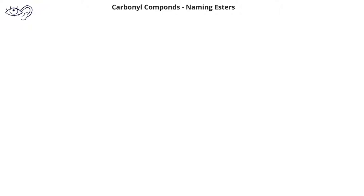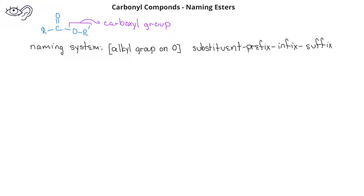Naming esters is a bit more complex than naming acyl chlorides or carboxylic acids. You should recall that an ester has a carboxyl group on the carbonyl carbon. When we name esters, the very beginning part of the name will be the name of the alkyl group attached to the carboxyl oxygen. This alkyl group will be named even in front of any substituents that are present. The suffix for esters is -oate (O-A-T-E).